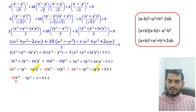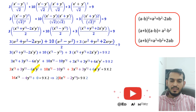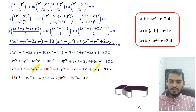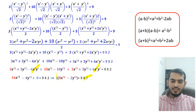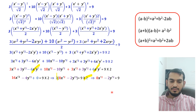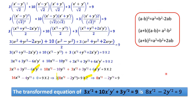In the expression 16x'² − 4y'², we can take 2 as common and cancel it with the 2 on the right-hand side from multiplying. This gives 8x'² − 2y'² = 9. Therefore the transformed equation is 8x'² − 2y'² = 9.